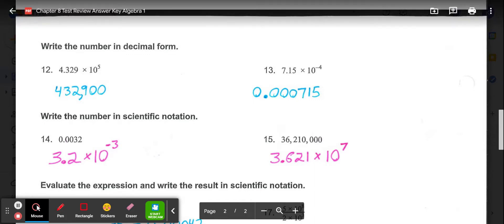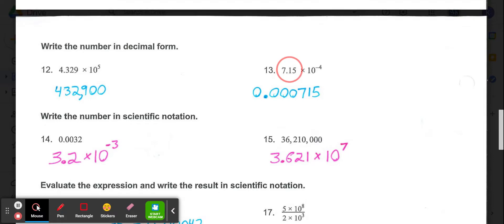So 4.329 times 10 to the 5th power means this decimal needs to move 5 spots to the right. So I'd have 432,900. In 13, 7.15 times 10 to the negative 4th means the decimal would move 4 spots left. So our answer would be 0.000715.